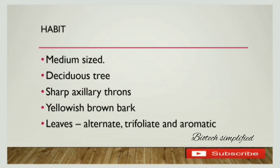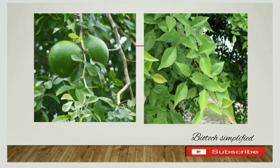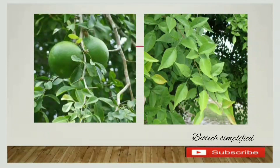Aegle marmelos is a medium-sized deciduous plant. It has sharp axillary thorns and its bark is yellowish brown. Its leaves are alternate, trifoliate, and aromatic. As you can see in the diagram, the sharp axillary thorns are present on the plant, and the leaves are alternate and trifoliate — meaning each leaf is arranged in three leaflets, as visible in the branch shown.